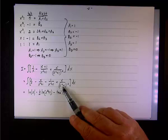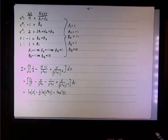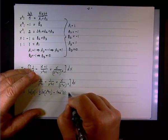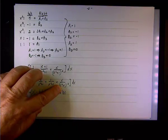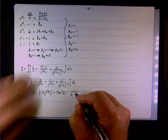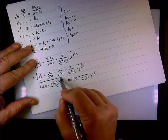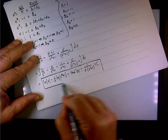For the last term x/(x² + 1)²: let u = x² + 1, then du = 2x dx, so x dx = ½ du. The integral becomes ½ ∫ u⁻² du = ½ · (−1/u) = −1/(2(x² + 1)). Combining everything, the final answer is ln|x| − ½ ln(x² + 1) − arctan(x) − 1/(2(x² + 1)) + C. Congratulations!